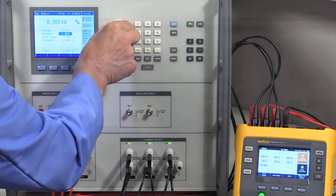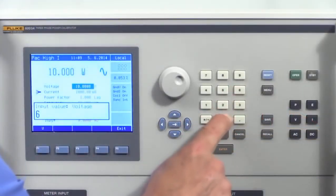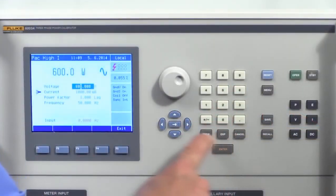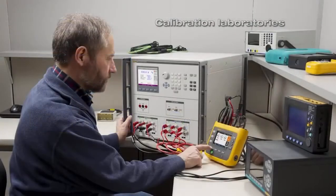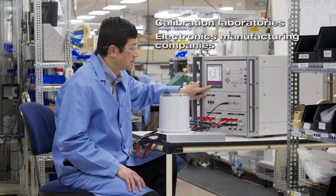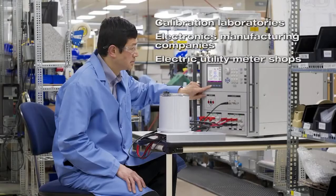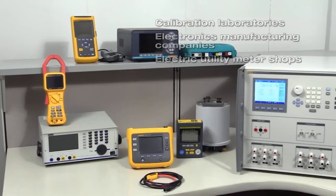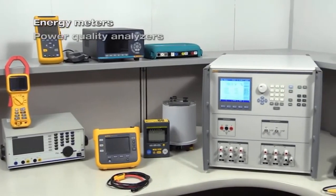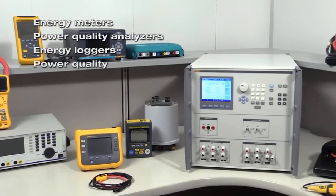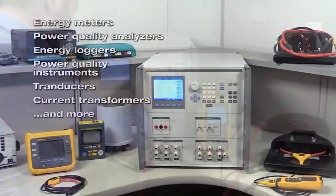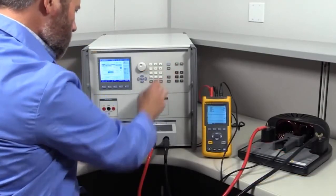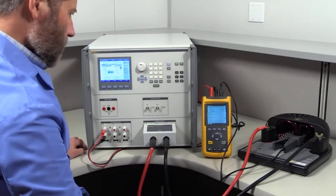It can also provide DC power and energy, as well as accurate and calibrated stand-alone voltage to 600 volts or current to 90 amps. It is an ideal solution for calibration laboratories, electronics manufacturing companies, electric utility meter shops, and other organizations that manufacture and maintain energy meters, power quality analyzers, and similar measuring instruments that need a way to test and calibrate them.